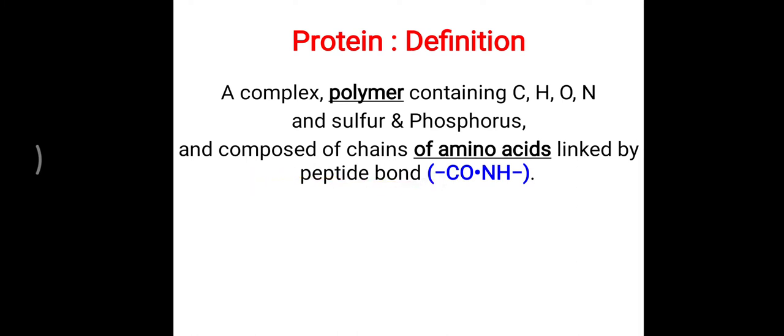Simply, if anyone asks about the definition of protein, you can say it is a polymer of amino acids. In amino acids, carbon, hydrogen, oxygen, and nitrogen are present; sometimes sulfur and phosphorus are also seen. All these amino acids are connected with the help of peptide bonds, making a protein.